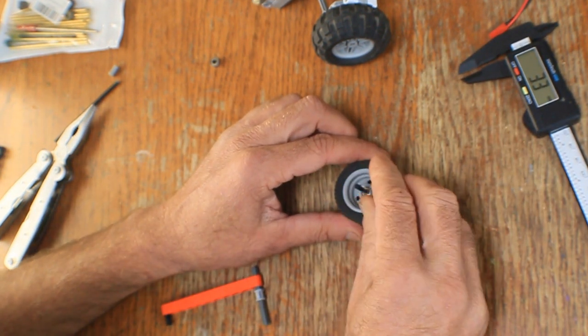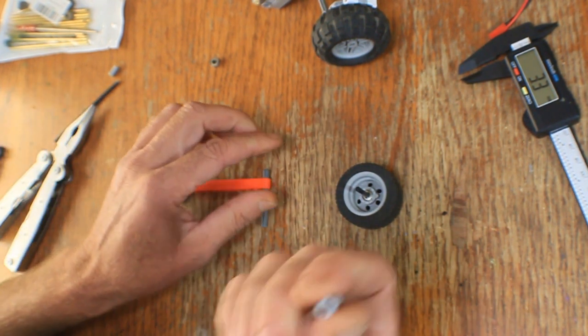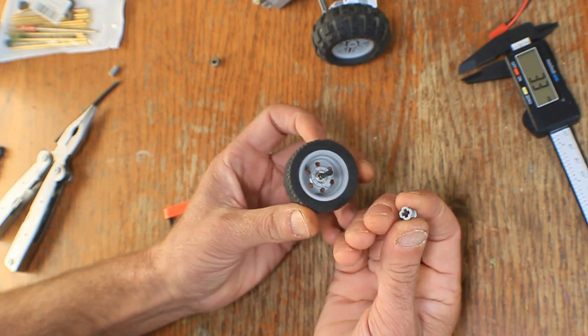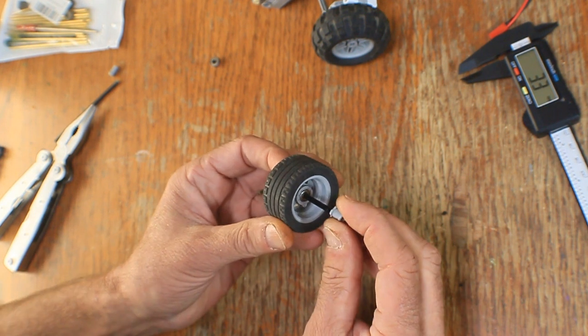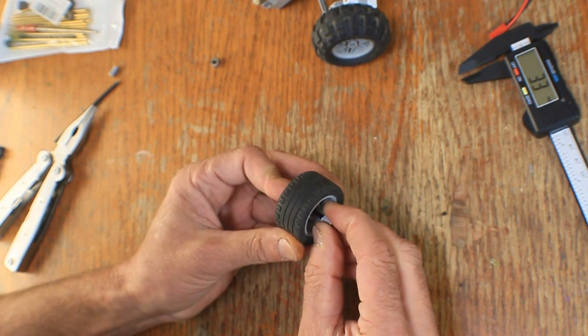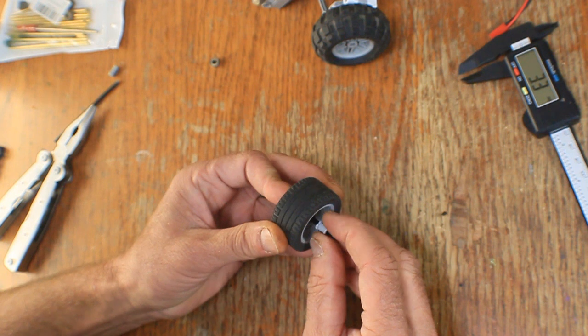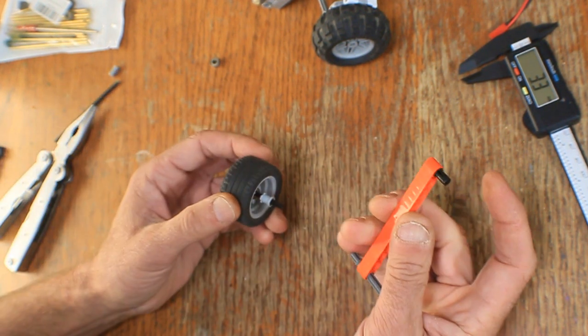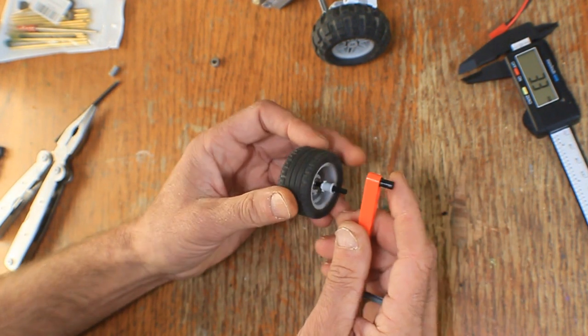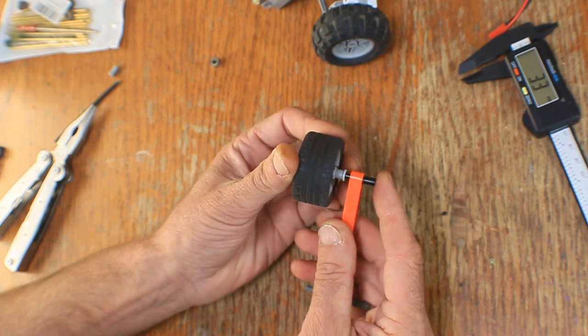This works because the Technic pieces also have an internal diameter of 3mm inside the Plus connector, so that fits just right. And one of these Technic pins also has a 3mm diameter, so now you can join it to the beam.